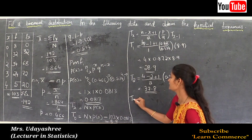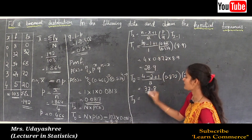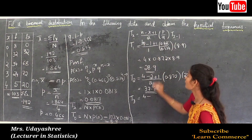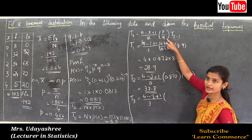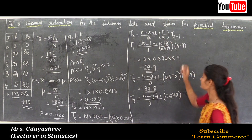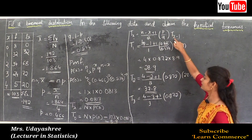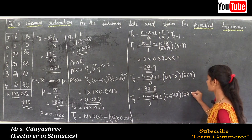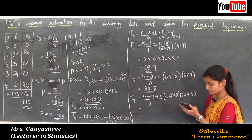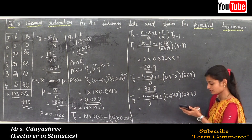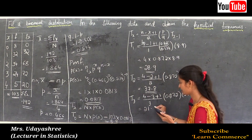Calculate t3. With x = 3, n = 4, p/q = 0.872, and t2 = 37.8: t3 = [(4 − 3 + 1)/3] · 0.872 · 37.8 = (2/3) · 0.872 · 37.8 = 0.66 × 0.872 × 37.8 = 21.9.